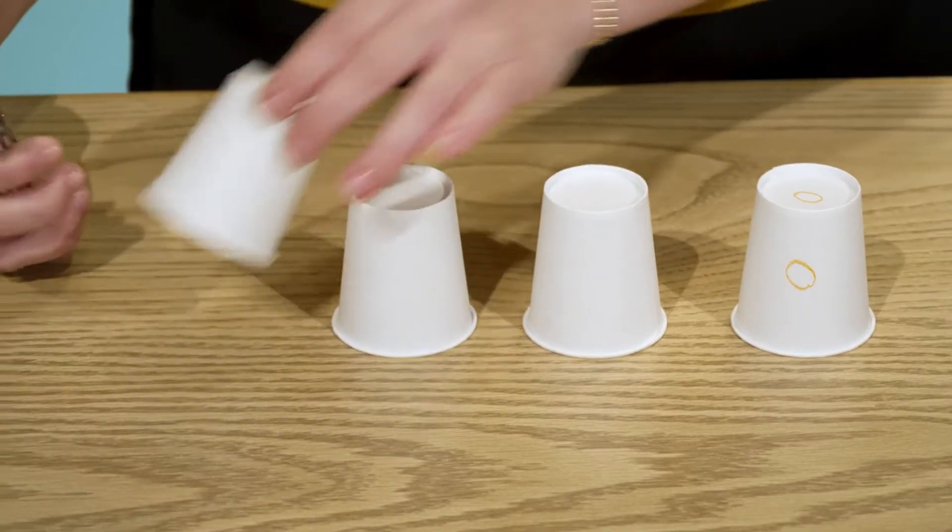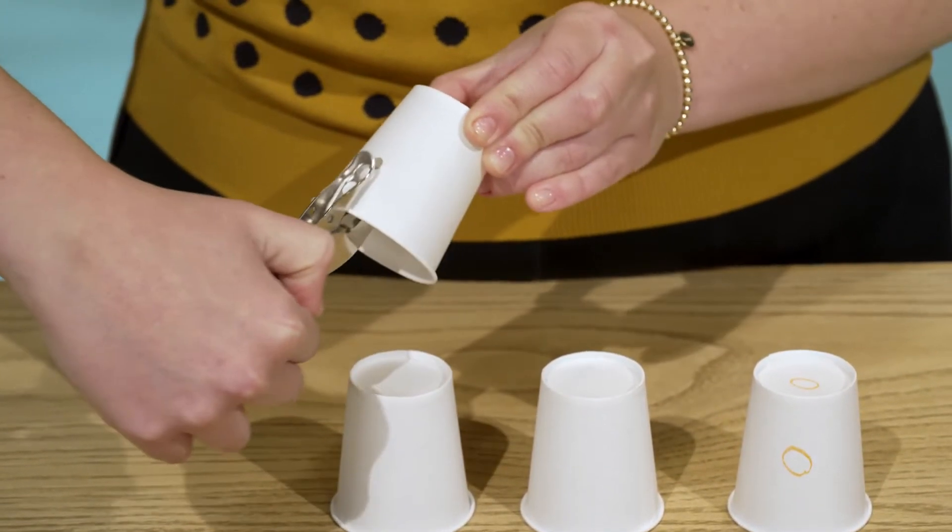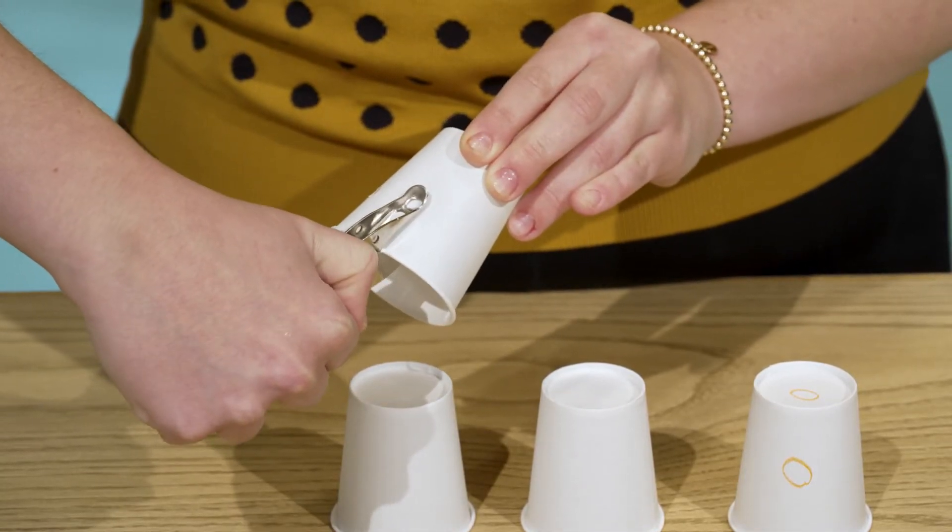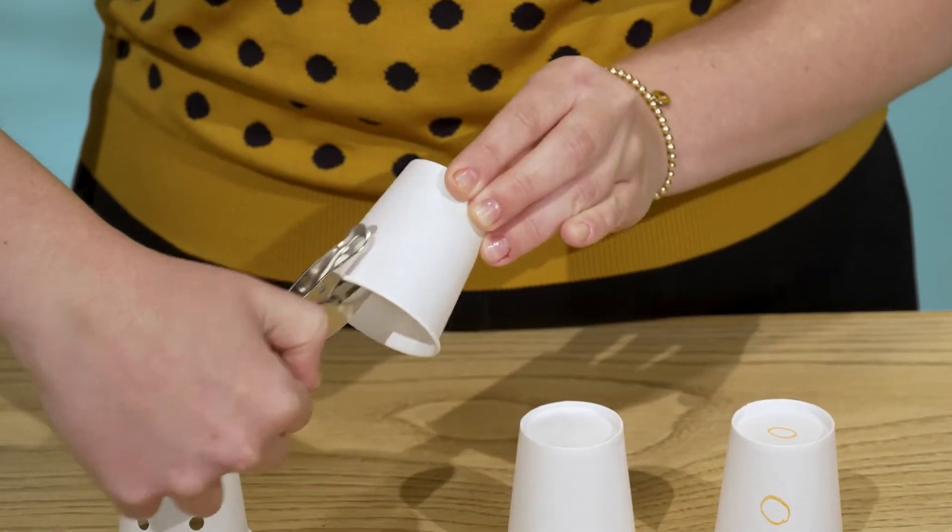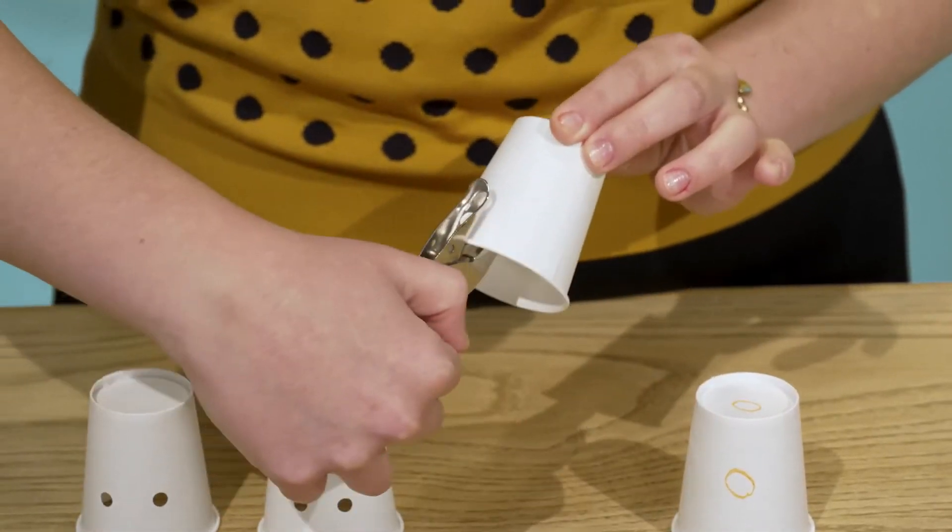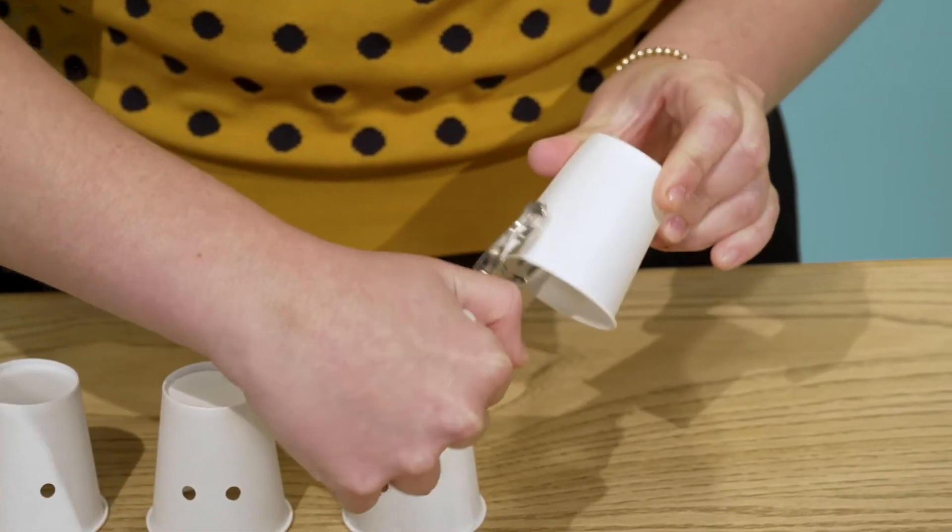Next, use your hole punch to punch two holes about one inch apart in the middle of the side of each of the four cups. Be sure not to punch holes through your artwork, though.